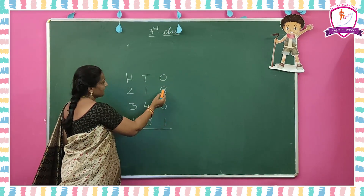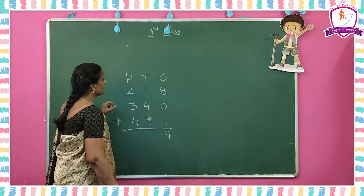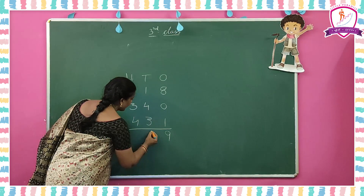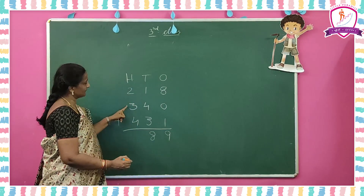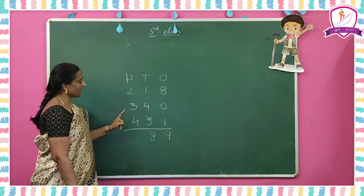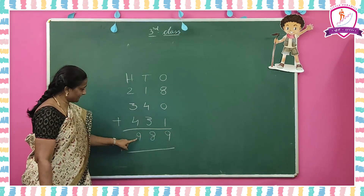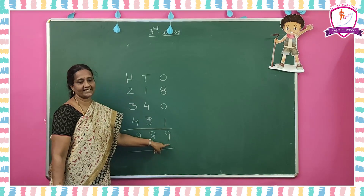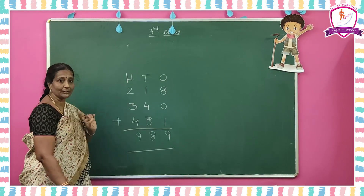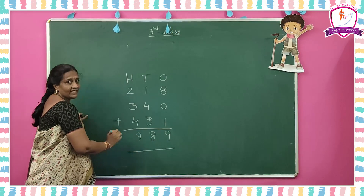First add the ones place: 8 plus 0 is 8, and 8 plus 1 is 9. Come to tens place: 1 plus 4 is 5, and 5 plus 3 is 8. Come to hundreds place: 2 plus 3 is 5, and 5 plus 4 is 9. The answer is nine hundred and eighty-nine — 9 hundreds, 8 tens, 9 ones. We added three 3-digit numbers without regrouping. Without regrouping means we did not get any carry forward — all answers were single digit, so we write them directly in the answer column.